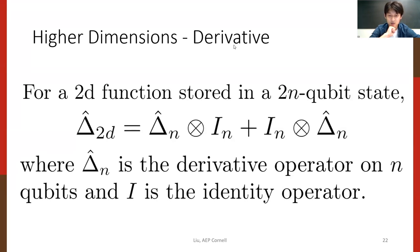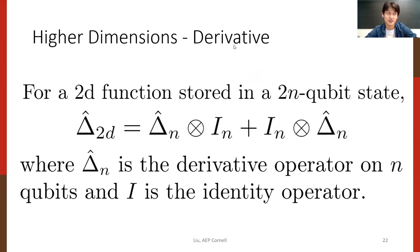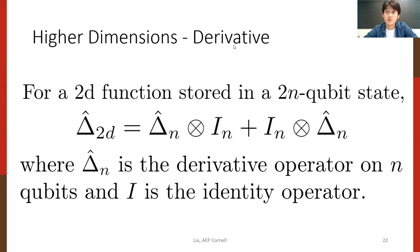Regarding the question about restrictions on time step width: depending on whether the scheme is implicit or explicit, the time step determines stability. The forward Euler time discretization has an error of order delta_t squared, so smaller is better for accuracy. But too-small time steps make the computation expensive. Choosing the time step hyperparameter is a trade-off between accuracy and computational cost.